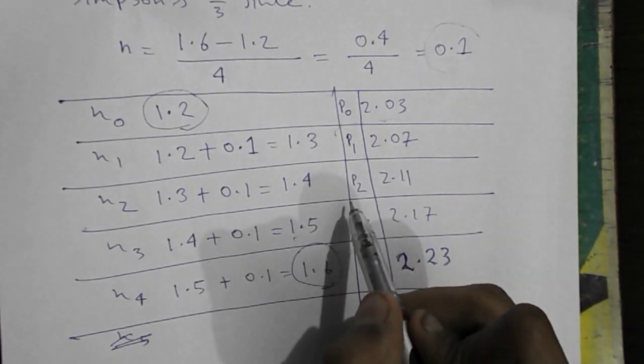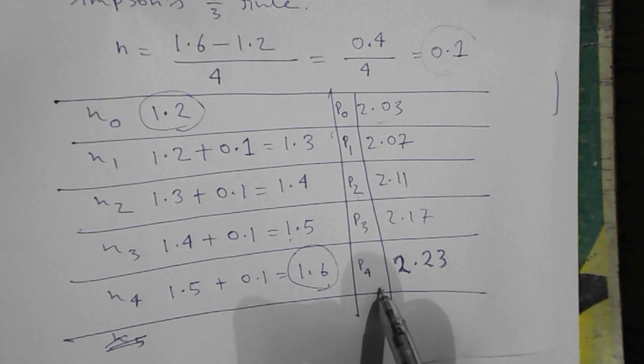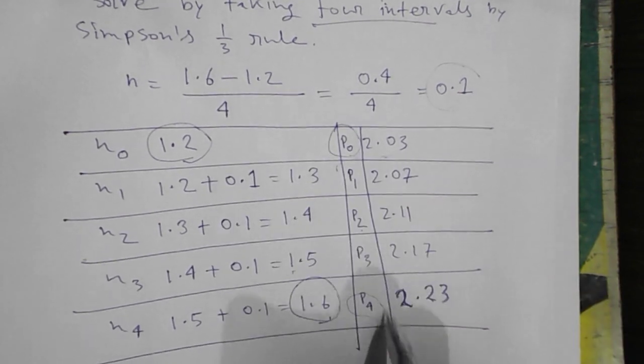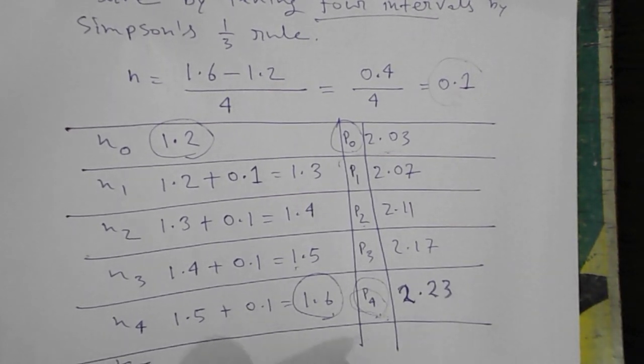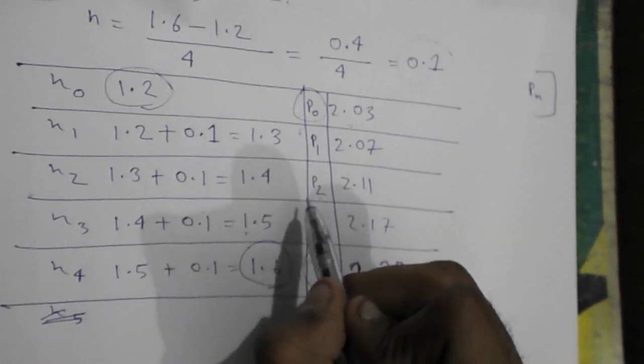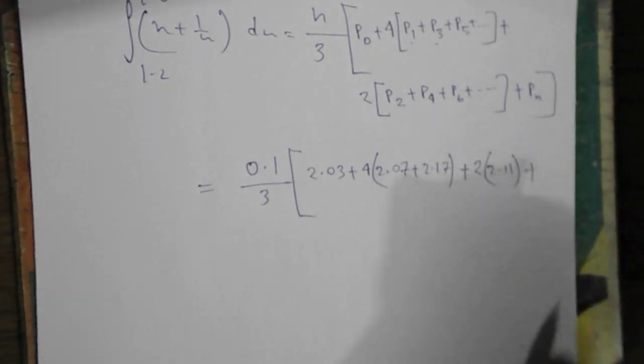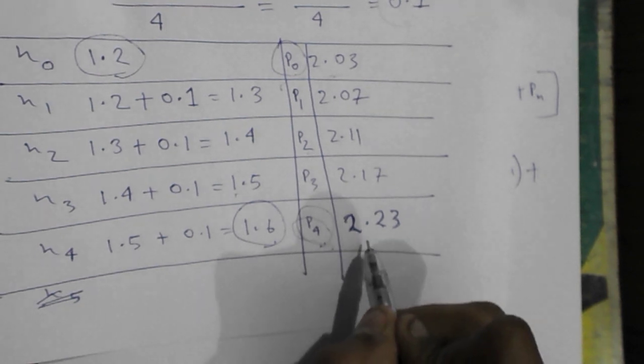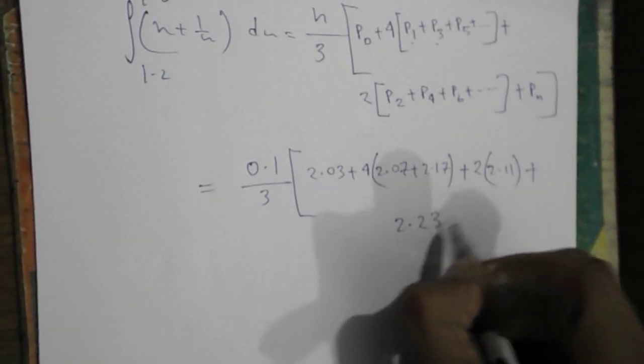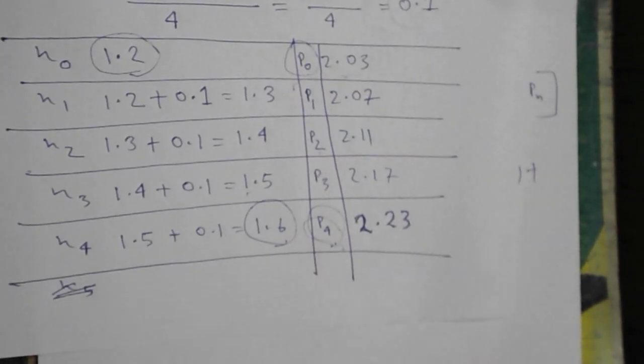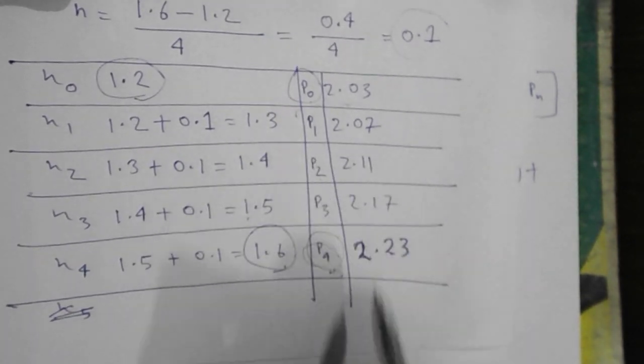Plus 4 into the odd numbers p1 and p3. p1 is 2.07 plus p3, 2.17. Plus 2 into the even numbers. Even numbers are p2, and p2 is 2.11. Then addition plus with the last one that is 2.23.